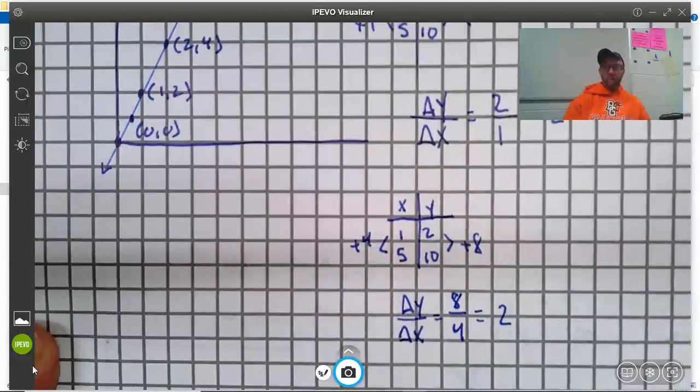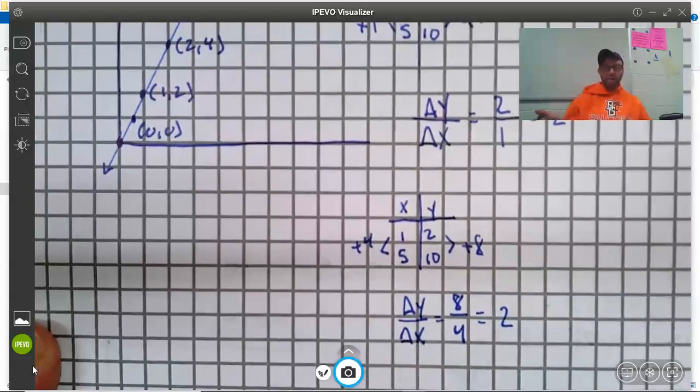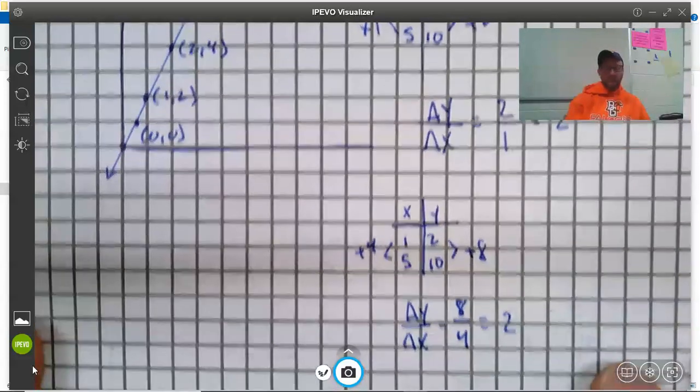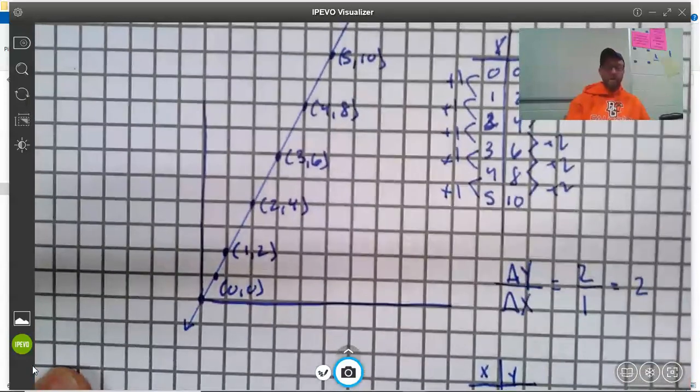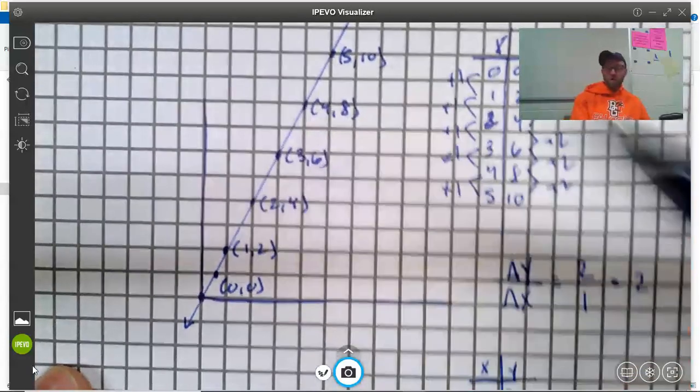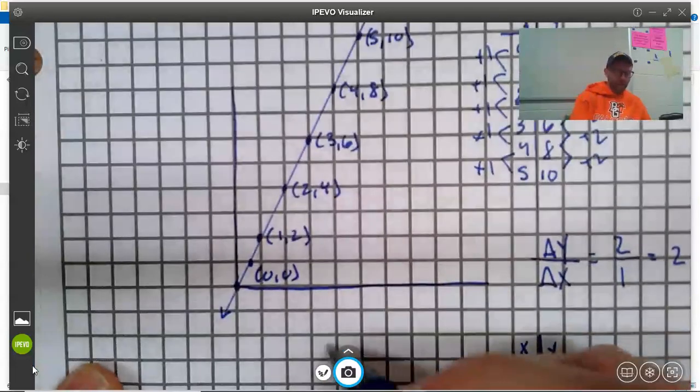So, if we write it as a fraction like this, it easily, no matter which two points we pick, it simplifies to 2. In fact, we could even go backwards. So, what if I go from 4, 8 down to 2, 4? I'm going down the line, so now my changes are all negative. So, let's take a look back.